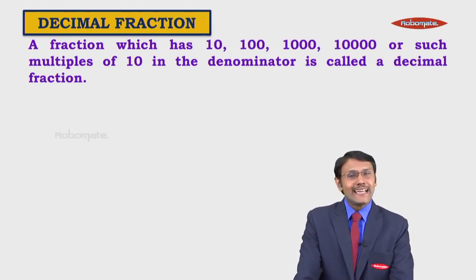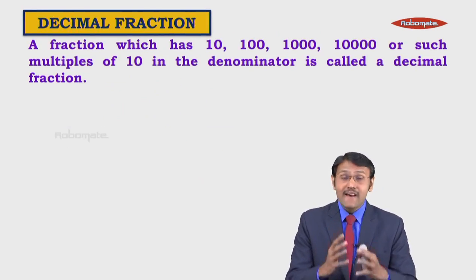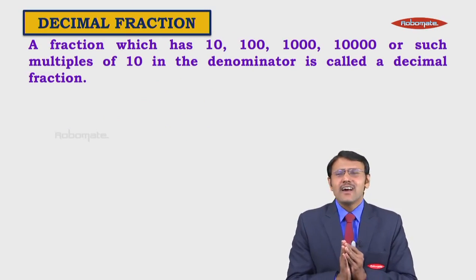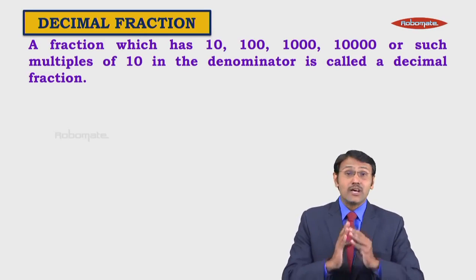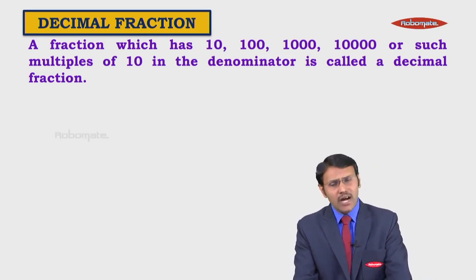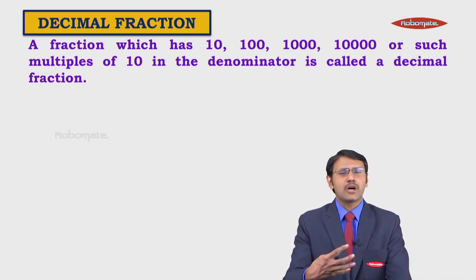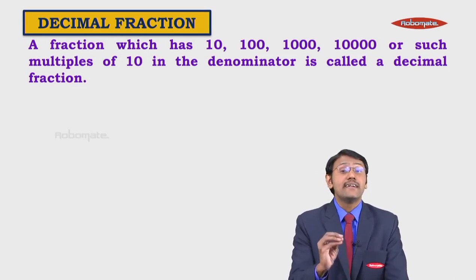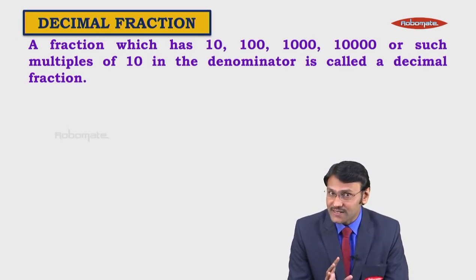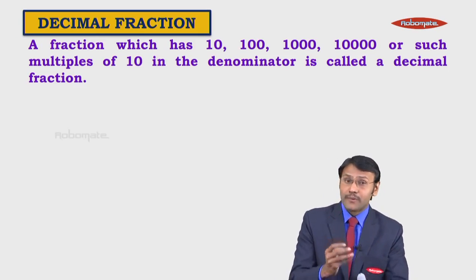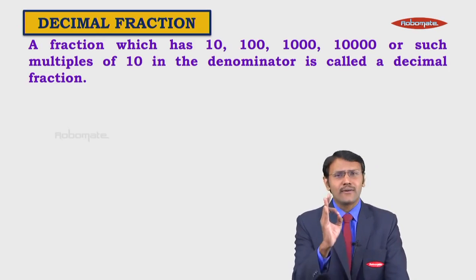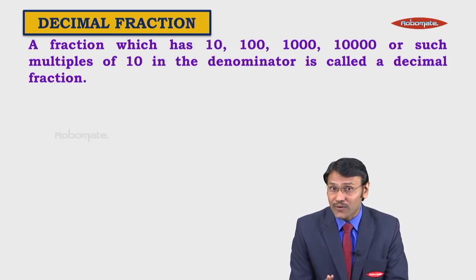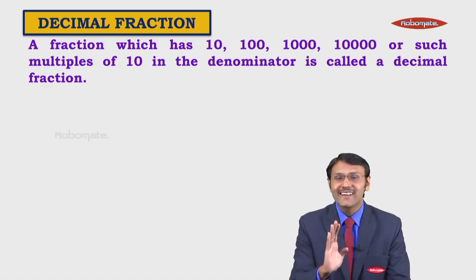Now let us discuss decimal fractions. A fraction which has 10, 100, 1000, 10,000 or such multiples of 10 in the denominator is called a decimal fraction. That means your denominator should contain only 10, 100, 1000, 10,000 and so on.